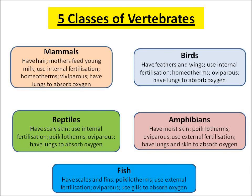Next we have reptiles, like alligators, crocodiles, and snakes. They have scaly skin. They also use internal fertilization, but they are poikilotherms, which means they are cold-blooded — they let their body temperature vary. They are oviparous, which means they lay eggs, and they also have lungs to absorb oxygen.